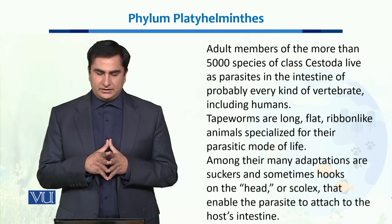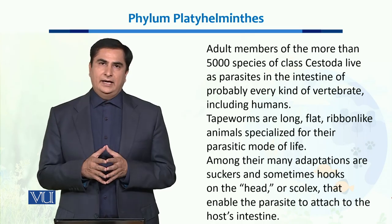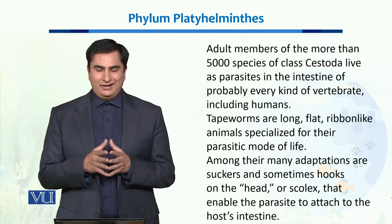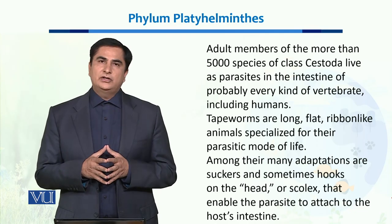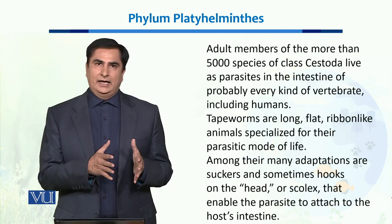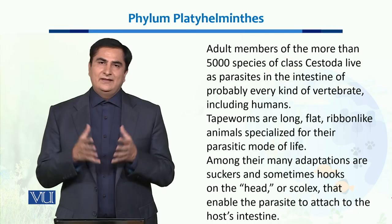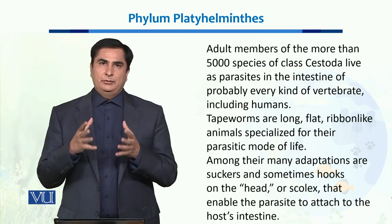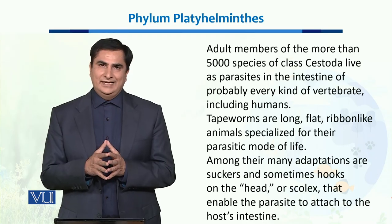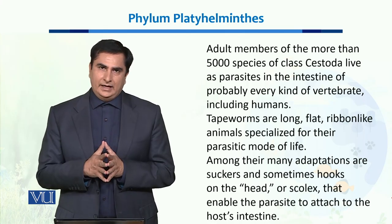The adult members of more than 5,000 species of class Cestoda live as parasites in the intestine of almost all vertebrate organisms, including humans. These tapeworms are long, flat, ribbon-like animals specialized for their parasitic mode of life. They have certain adaptations including the presence of suckers as well as a scolex, or head, which helps them attach themselves to the intestine of their hosts.